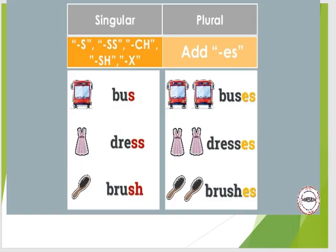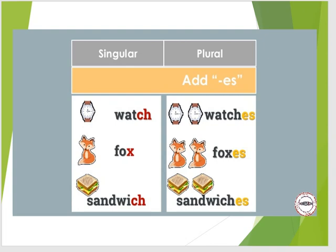Let's look at examples. Bus becomes buses. As nouns end with S, SS, CH, SH, and X, we add ES in plural. Watch becomes watches. Fox becomes foxes. Sandwiches.